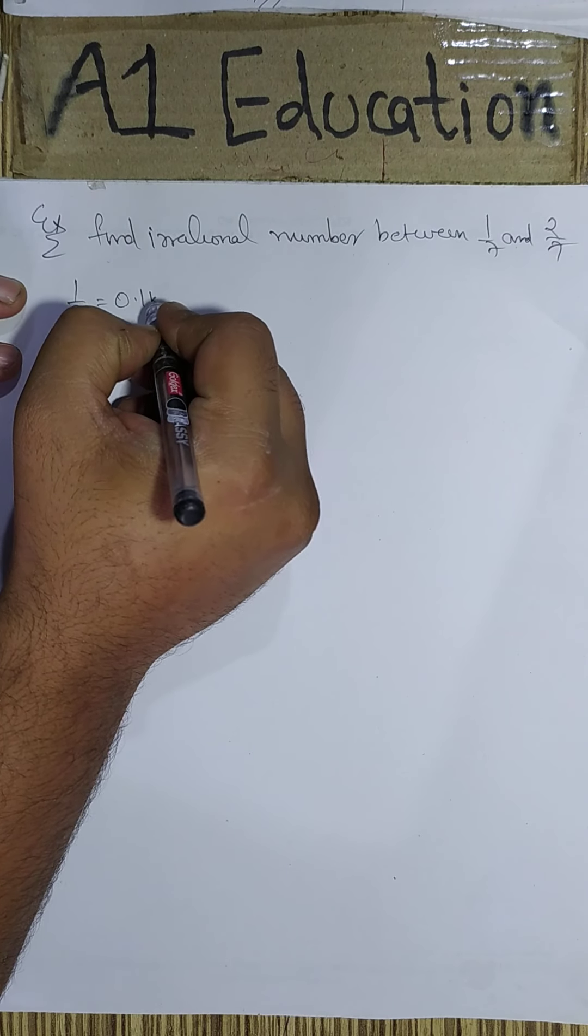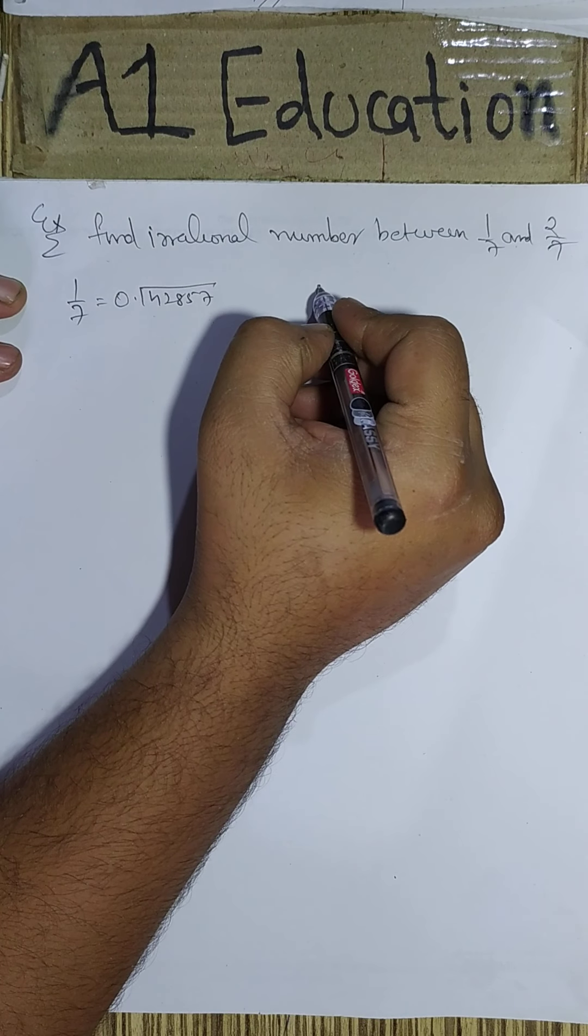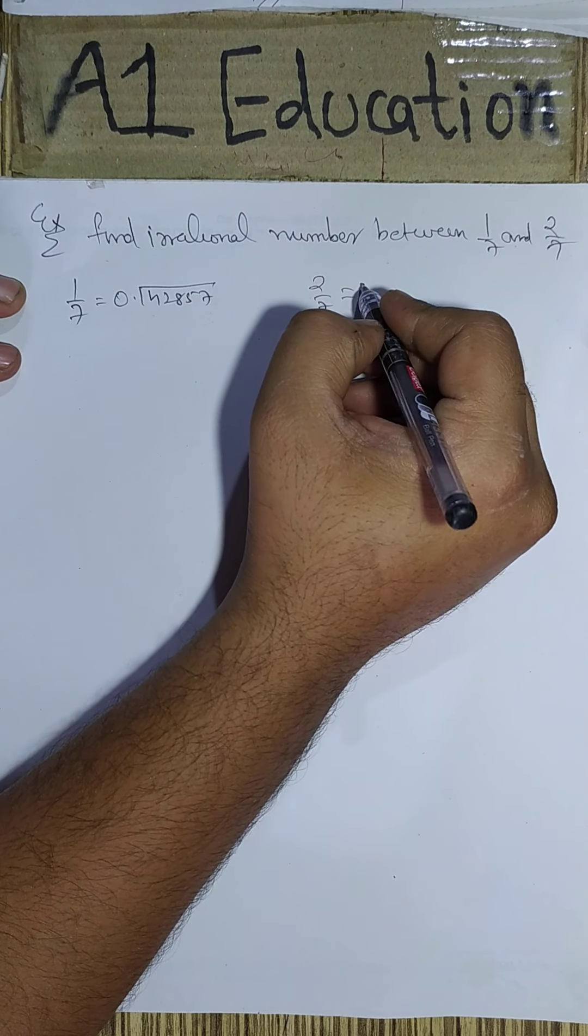If we find out the values of 2/7, we get 0.285714.